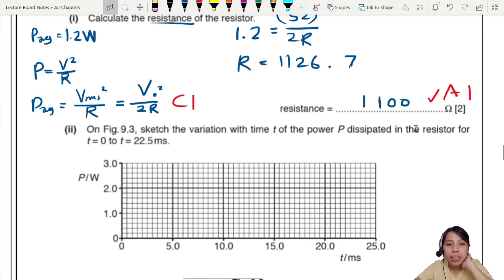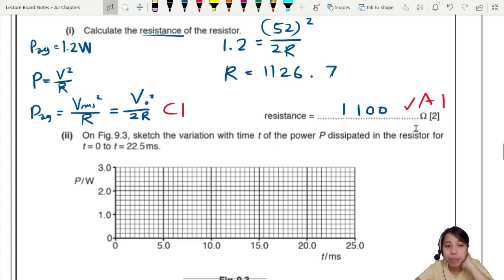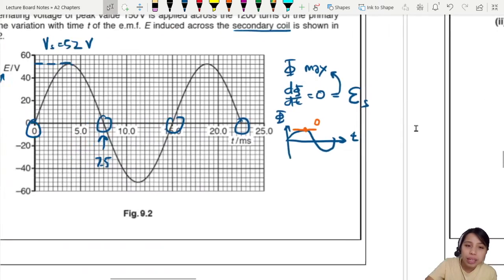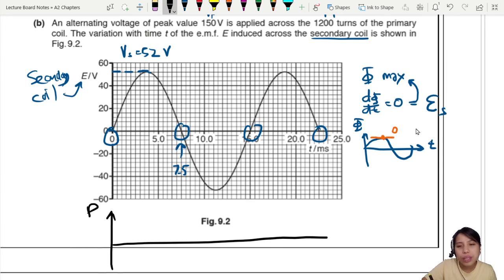Last one. Sketch the variation with time of power P dissipated in the resistor for a certain time. We have to sketch the power dissipated in the resistor based on what they gave to us. How do we do that? Power - how is power related to V? We know that power is V squared over R. So how do you plot that?